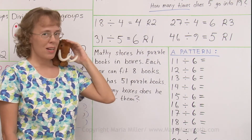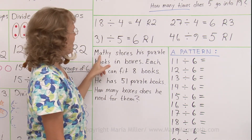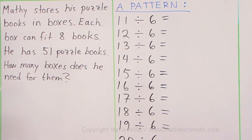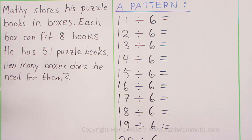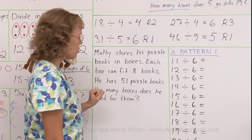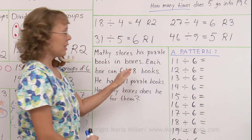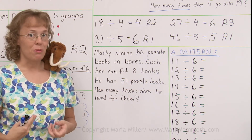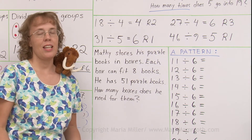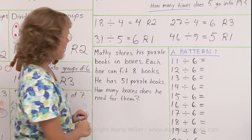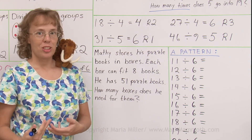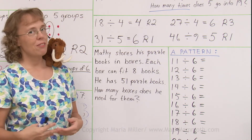Now here's a word problem that Matthew gave us. Matthew stores his puzzle books in boxes. Each box can fit 8 books, and he has 51 puzzle books. He loves puzzles! How many boxes does he need? This is a typical division problem because we are packing something — fitting something into containers. We can solve it by division or multiplication, because when we divide, we need to use multiplication.